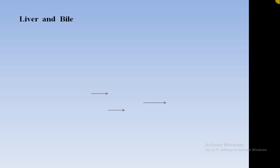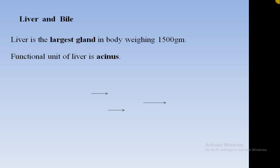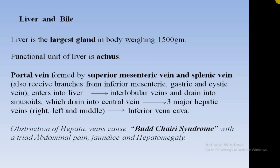Liver and bile: the liver is the largest gland in the body, weighing around 1500 grams. The functional unit of the liver is the acinus. The portal vein — commonly asked in anatomy — is formed by the superior mesenteric vein and the splenic vein, which enters the liver, forms the interlobular veins, and drains into the sinusoids.